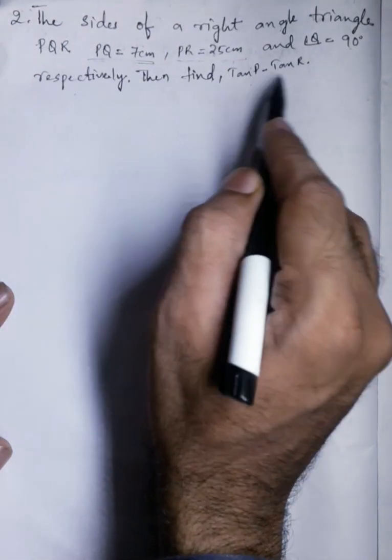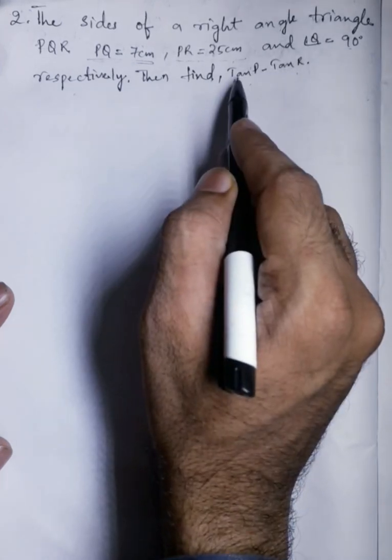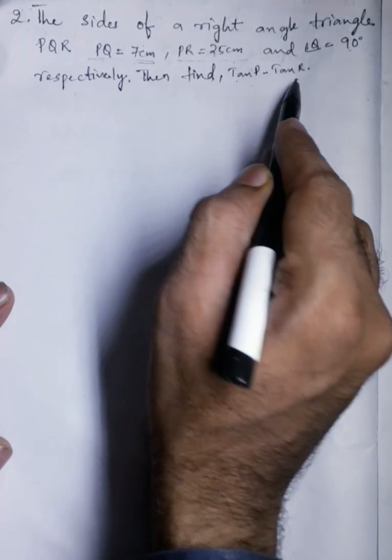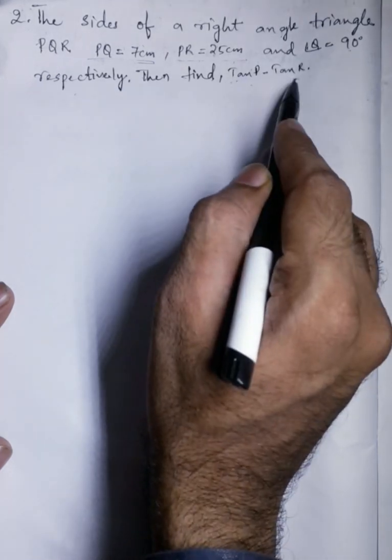Then find tanP minus tanR. So we have to find the tanP value, then tanR value, then we have to subtract.